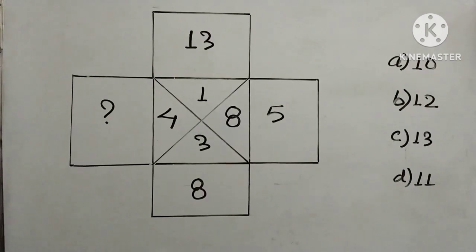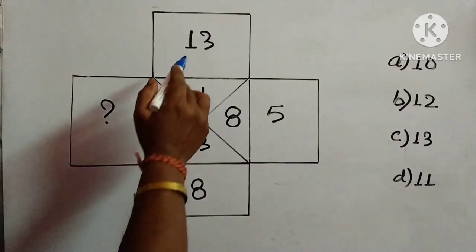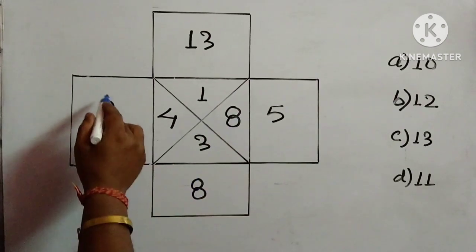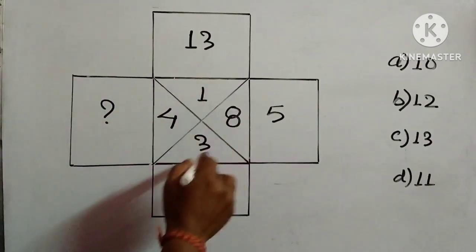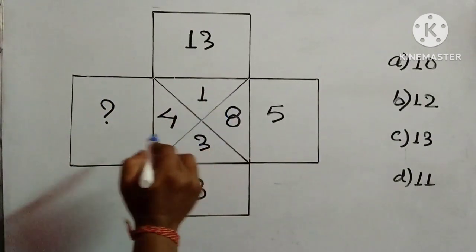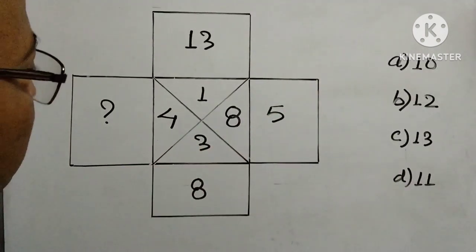This is a question of mathematical reasoning where we are observing 13, 5, 8. We need to find out this number and inside we have 4, 1, 8 and 3. Four options are given.